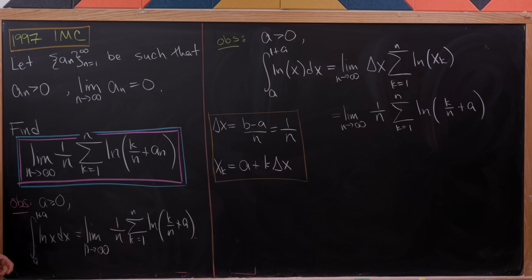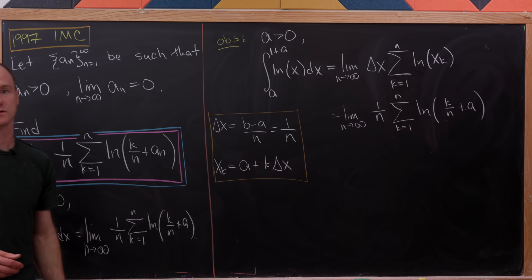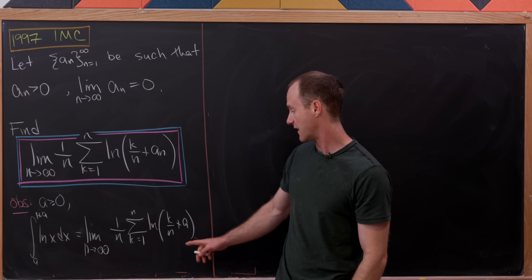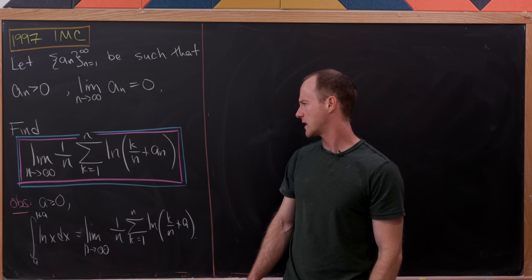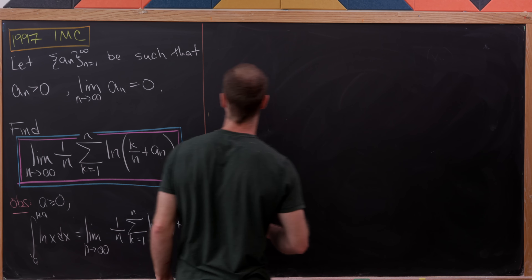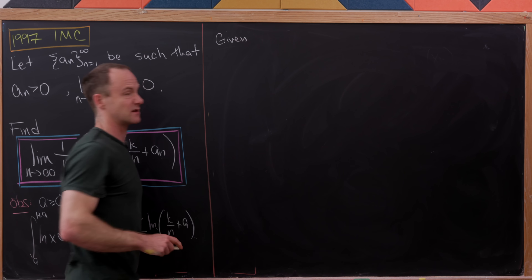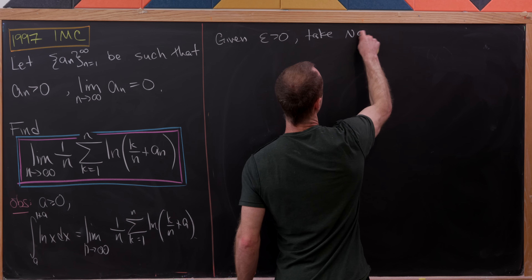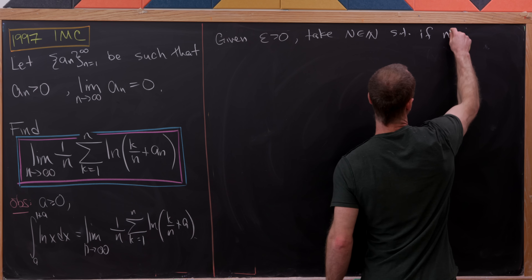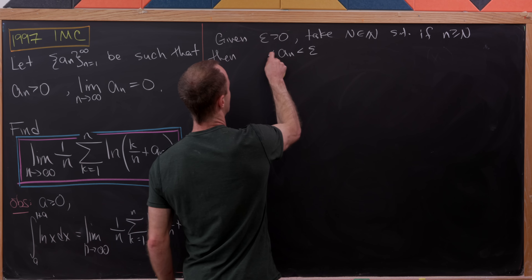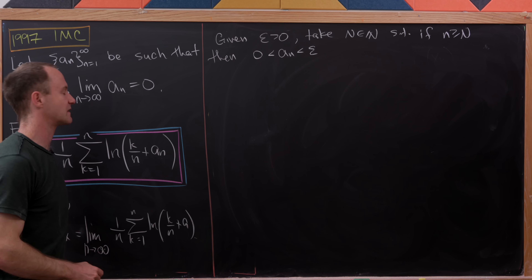With this observation we're in good shape. The idea will be to bound our expression between two things that look very similar, but where a_n has been replaced with a constant, so we can use this rule. We'll use the fact that a_n is positive, its limit is zero, and the epsilon-N definition of a limit. Given epsilon greater than zero, take capital N such that if little n is greater than or equal to capital N, then 0 < a_n < epsilon.